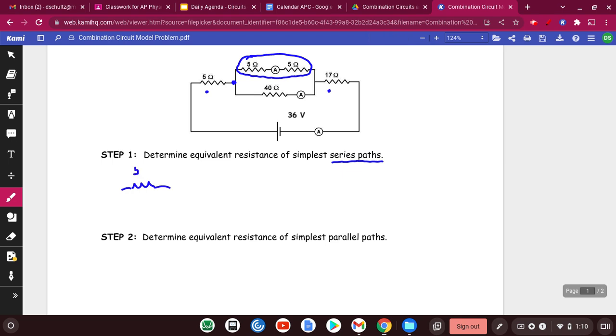So here's my 5 ohm. I'm going to then simplify 5 plus 5 into 10, and I still have my 17. And I left out something, didn't I? I left out my 40. Don't want to leave that out.